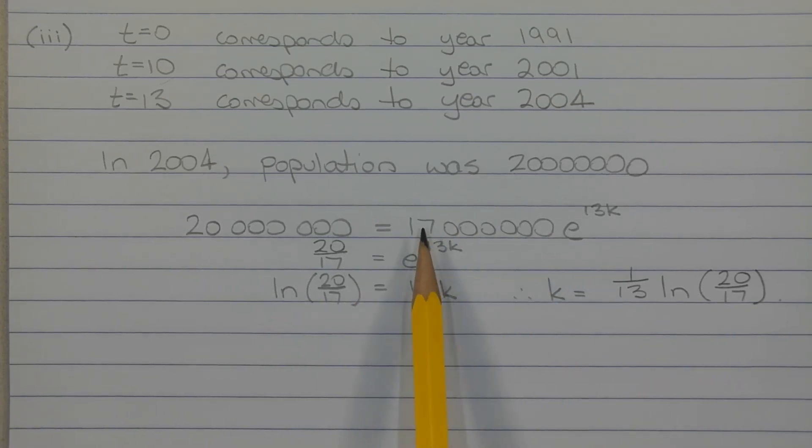Dividing both sides of the equation by 17 million, we get 20 over 17 is equal to E to the power of 13K. Taking the natural logarithm of both sides to cancel this E, we get LN of 20 over 17 is equal to 13K. Then dividing both sides of the equation by 13 to isolate K, we get K is equal to 1 over 13 times LN 20 over 17, and I've left K in exact form.